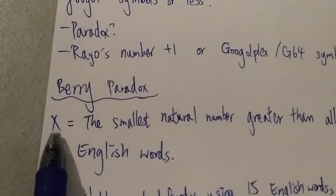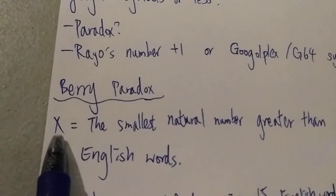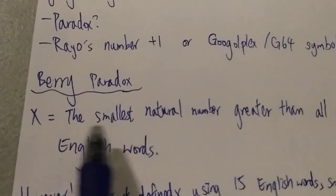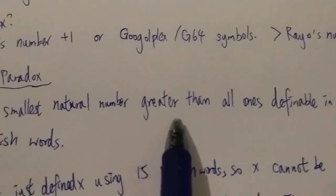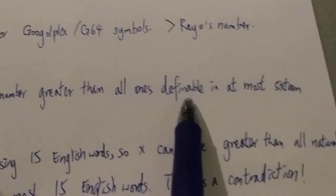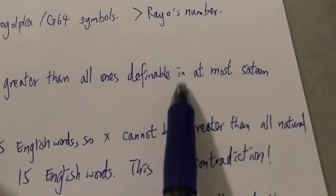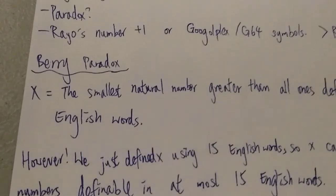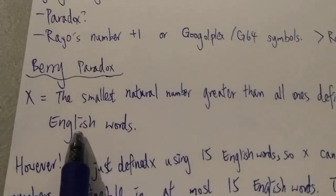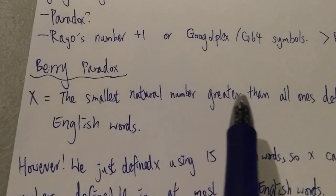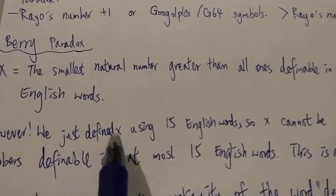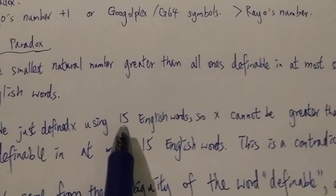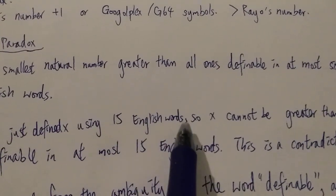So for example, you can define the number X as this: the smallest natural number greater than all ones definable in at most 16 English words. However, this is a paradox because we just defined X using just 15 English words.